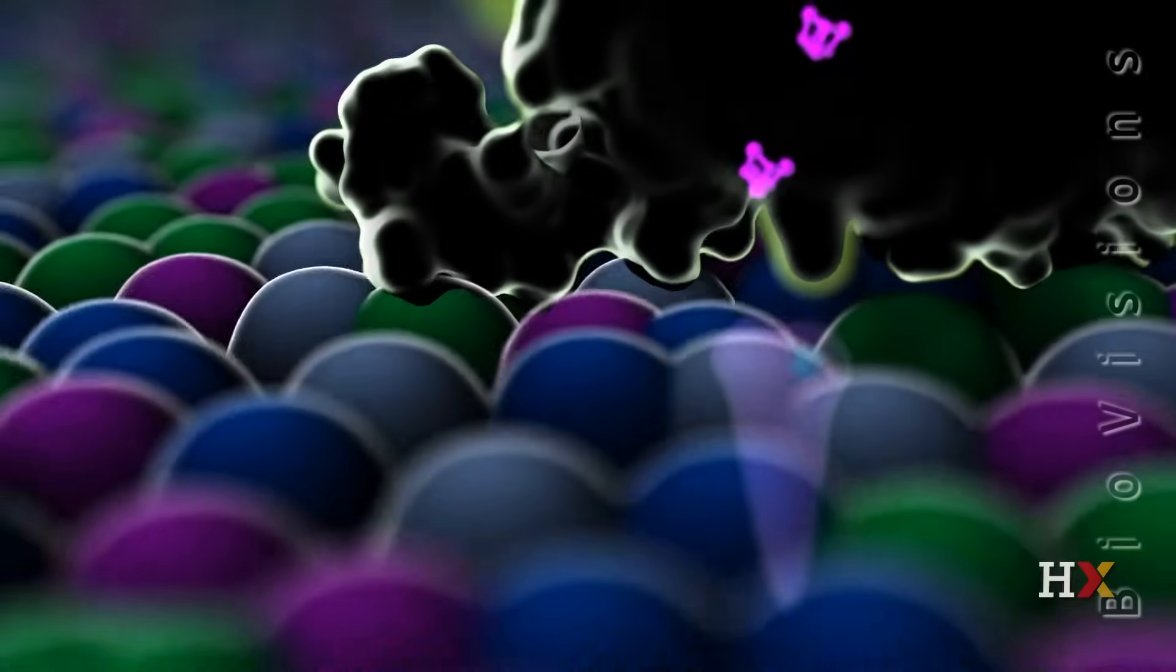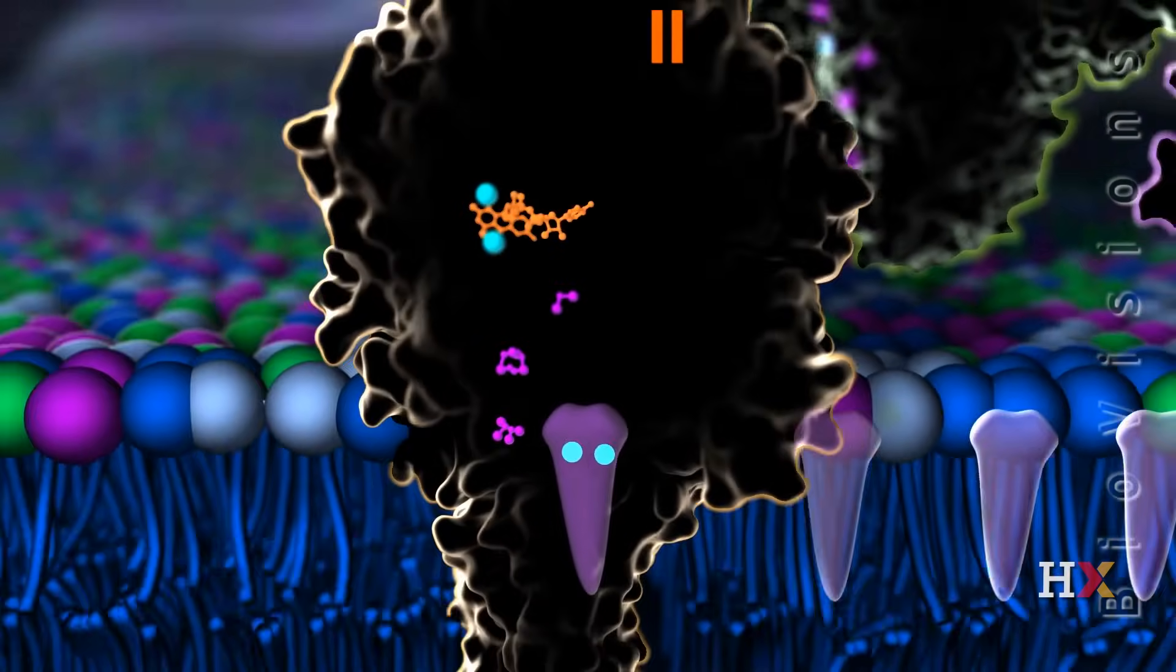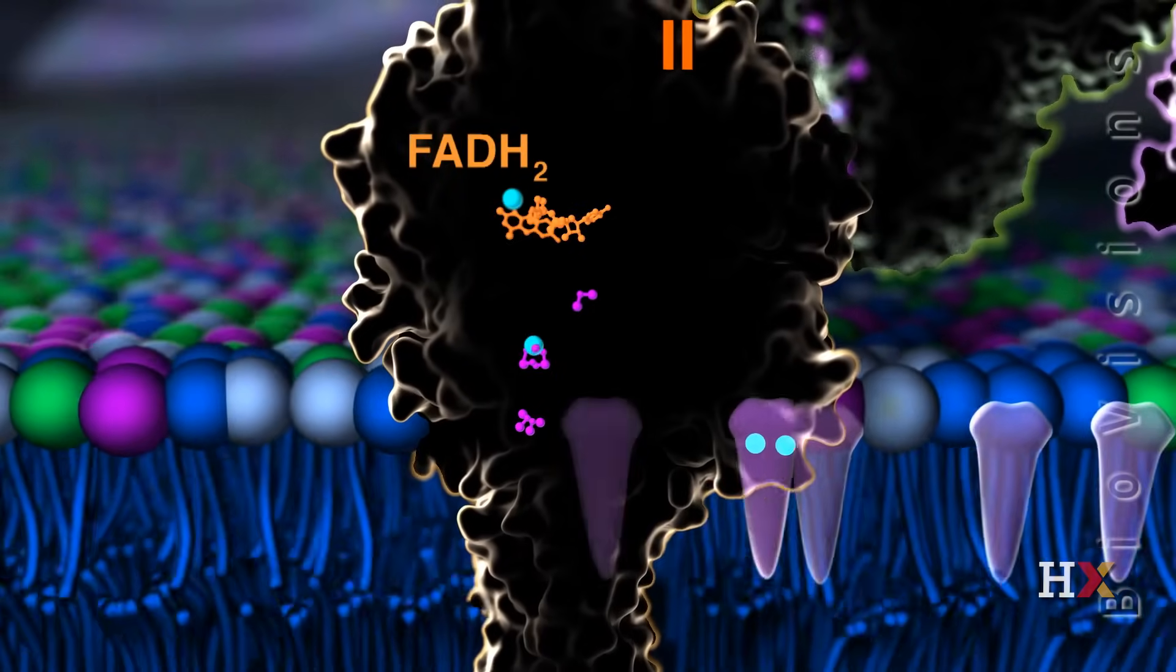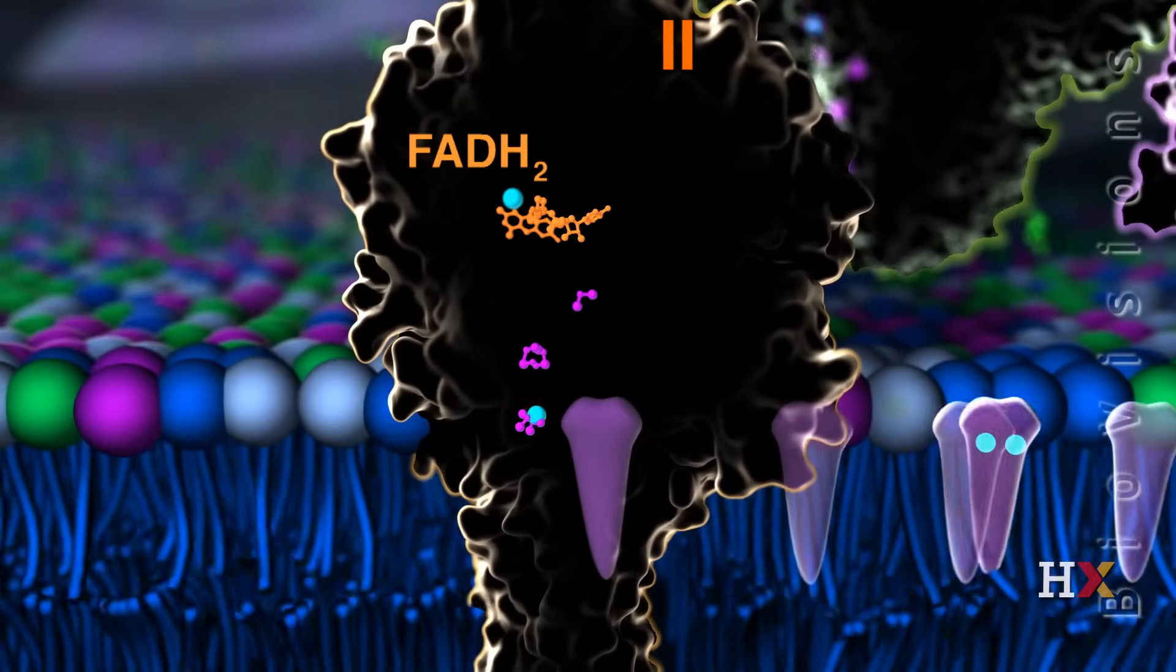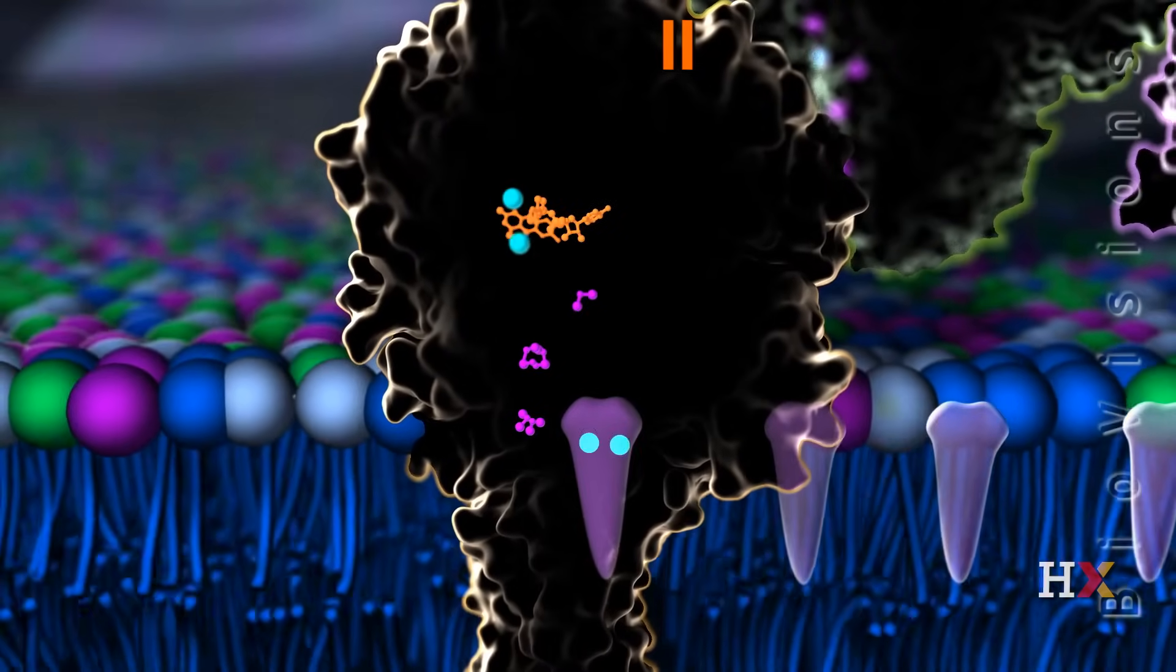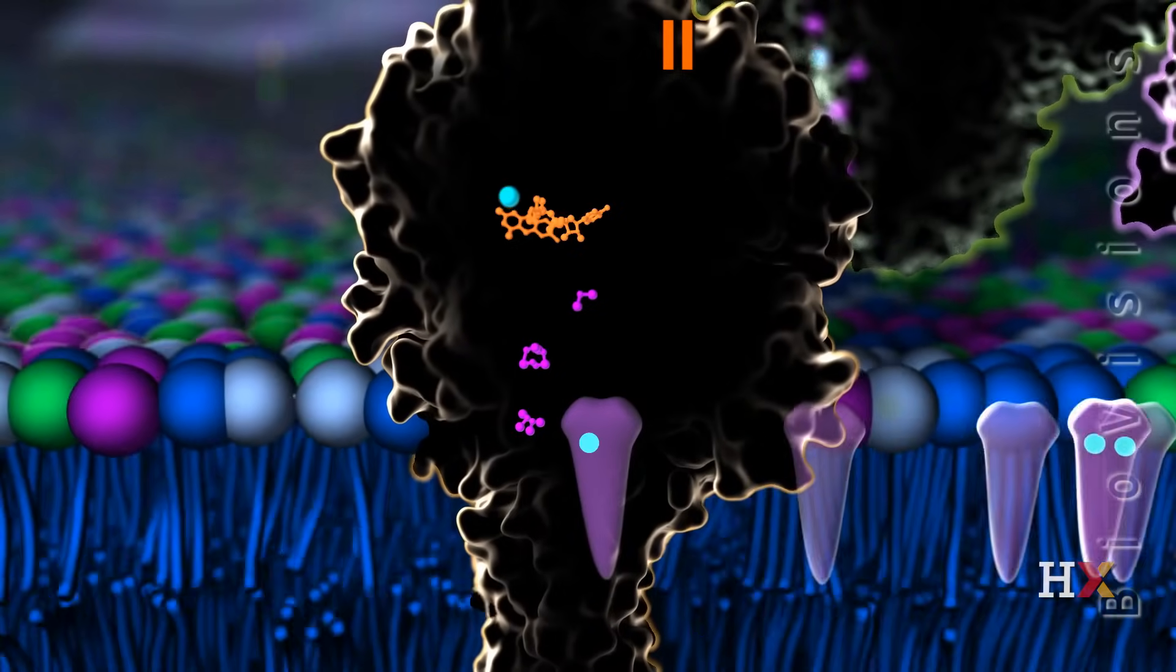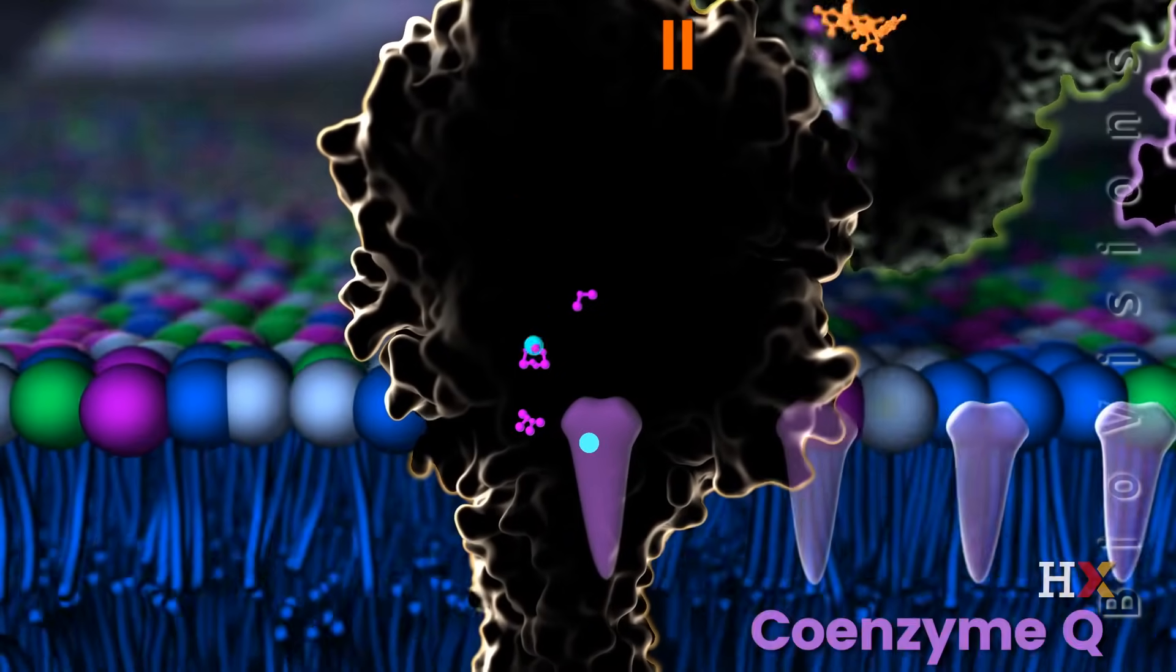Complex two is similar to complex one in two important ways. First, high energy electrons also enter complex two via a byproduct of sugar metabolism, although here the molecule is FADH2. Second, complex two also transfers electrons between several redox centers before donating them to coenzyme Q.